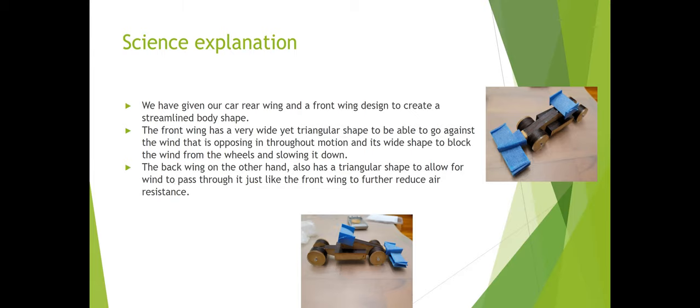The front wing has a very wide yet triangular shape to allow it to go against the wind that is opposing it throughout motion. Its wide shape has been designed to block the wind from the wheels and prevent interruption.